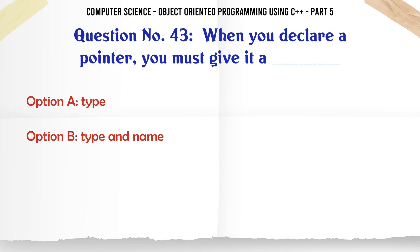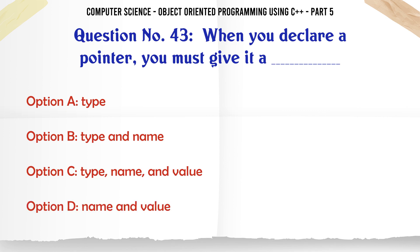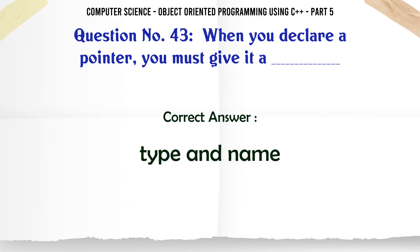When you declare a pointer you must give it a. A. Type. B. Type and name. C. Type, name, and value. D. Name and value. The correct answer is: Type and name.